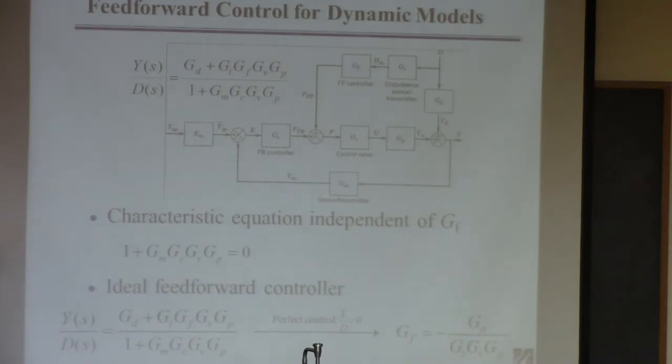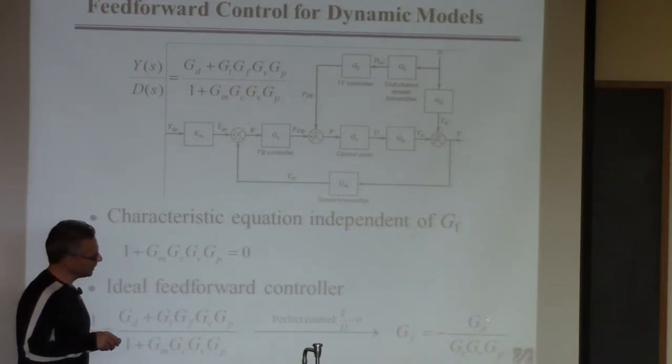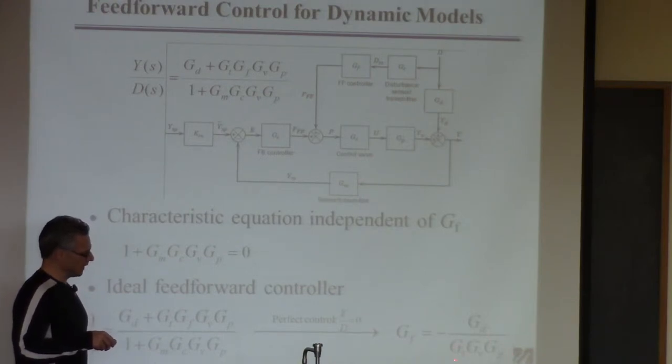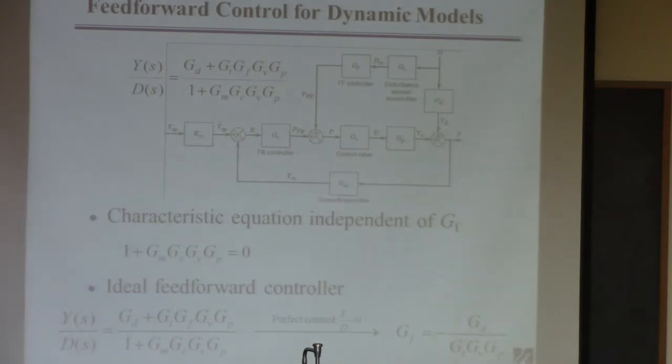So all this equation over here is I set the numerator equal to zero and solve for GF. You get that right there. It's not very complex. So the problem is going to be, can I implement this thing? So in principle, it looks easy, right? You get a model of the disturbance transfer function, the process transfer function. Maybe the transmitter and the valve, or maybe those are all lumped together. It doesn't make any difference. And you take the ratio, and that's your controller. Okay. The problem with this equation is sometimes you can't implement this, which I'll talk about in a minute.